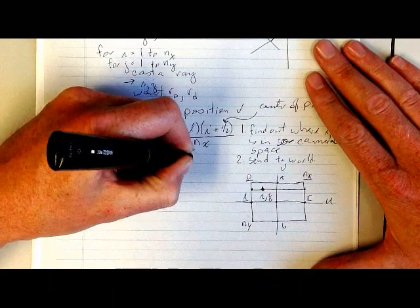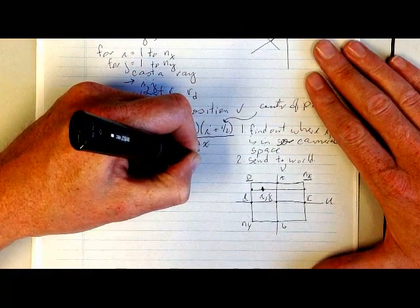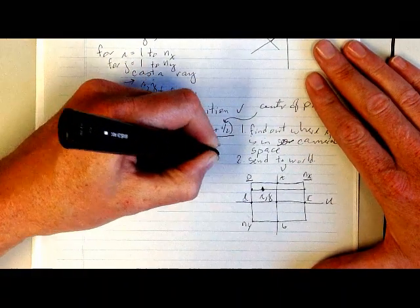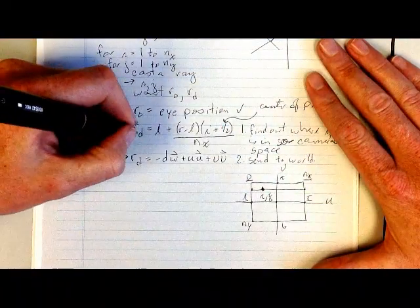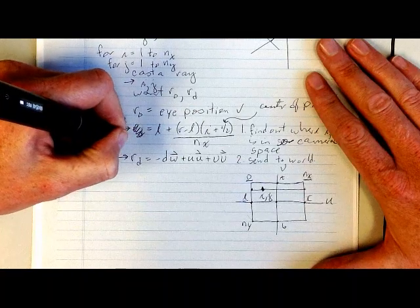The reason we add one half right here is we want to go through the center of the pixel. If you want to jitter your ray a little bit and go through something that's not the center of the pixel, then you would just change that one half to be something else.